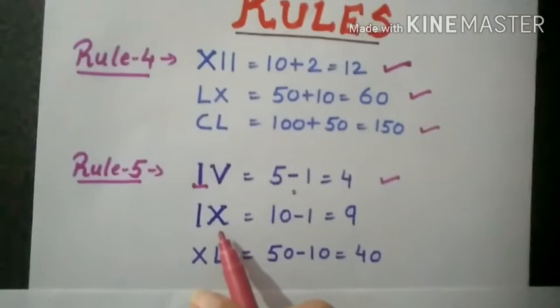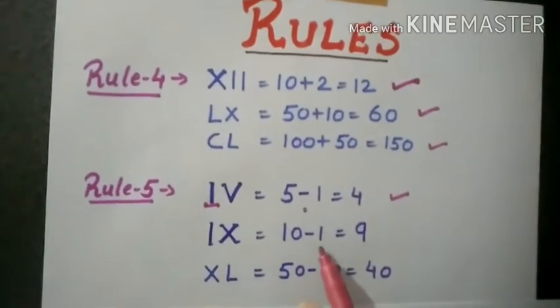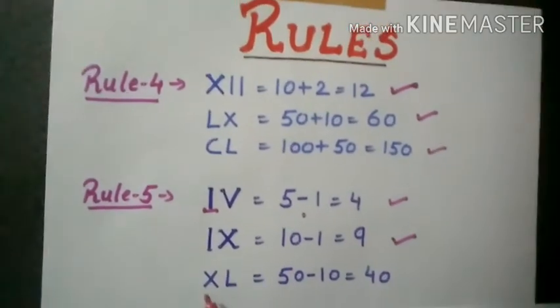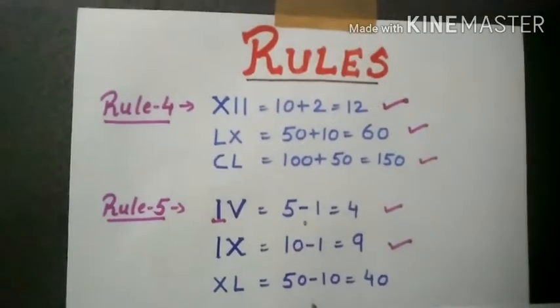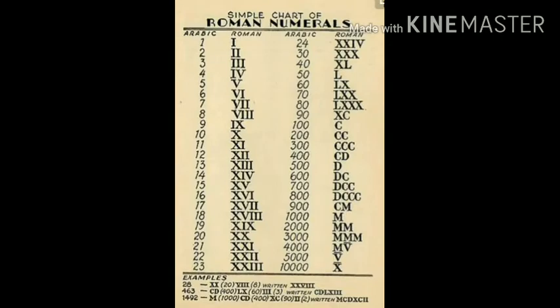I is written on the left side of X means 10 minus 1, which is 9. X is written on the left side of L means 50 minus 10, which is 40. So, with the help of these rules, you can also write Roman numerals.